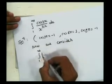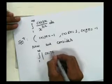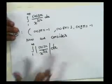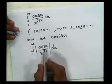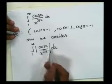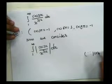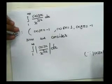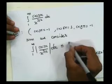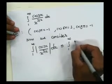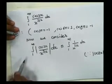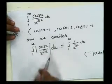We consider the absolute value of the integral: integration from 1 to infinity of modulus of cos(3x) upon x to the power 3/2 dx. We know that the absolute value of cos(3x) can never exceed 1, so the absolute value of cos(3x) is always less than or equal to 1. We can therefore write this as less than or equal to integration from 1 to infinity of 1 upon x to the power 3/2 dx.